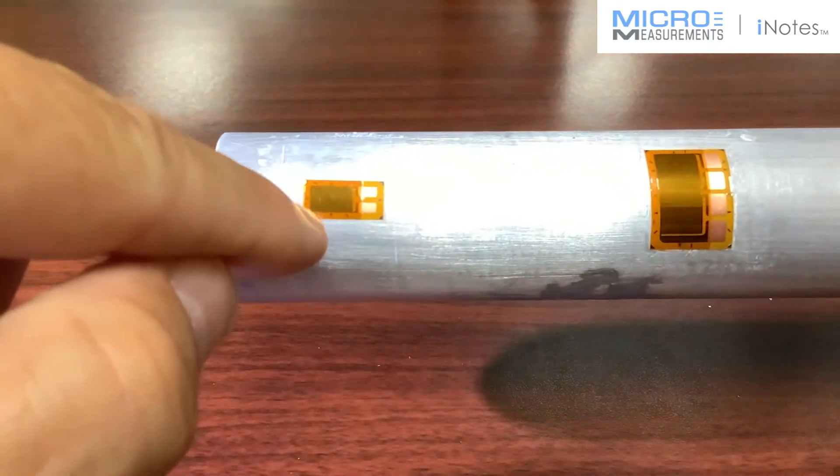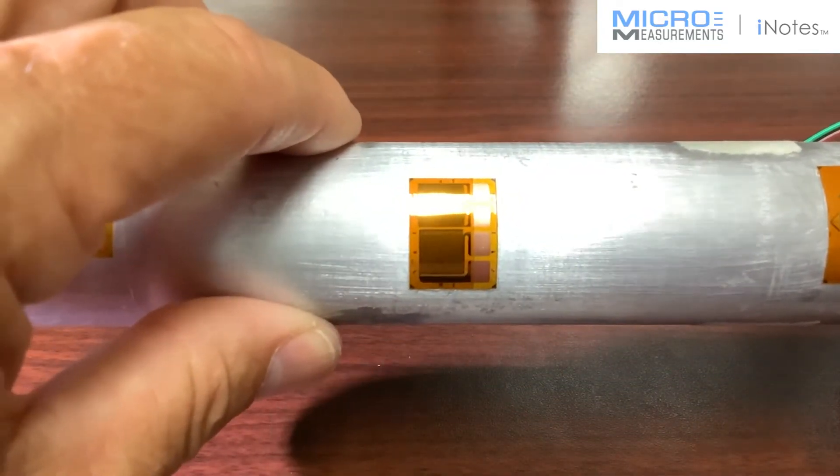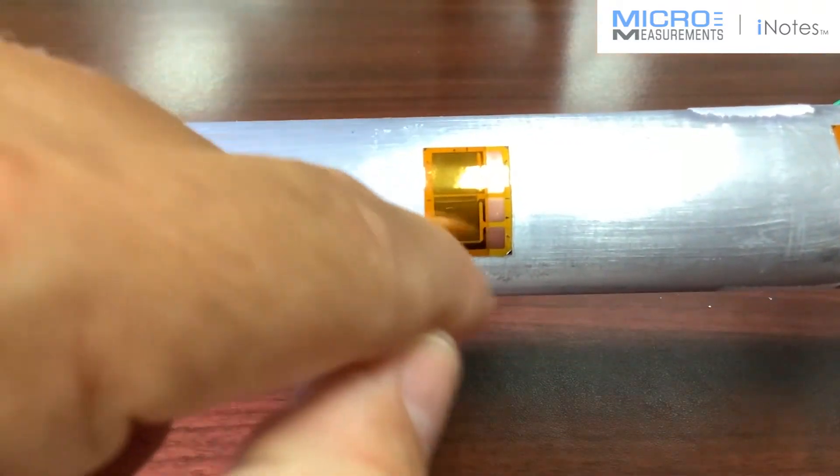Well, instead of installing two separate gauges, now you can install one, and effectively, you get a two-for-one. All you have to install is really the one gauge, but it's got the two sensitive grids already oriented so that you can measure the strain in the two directions.